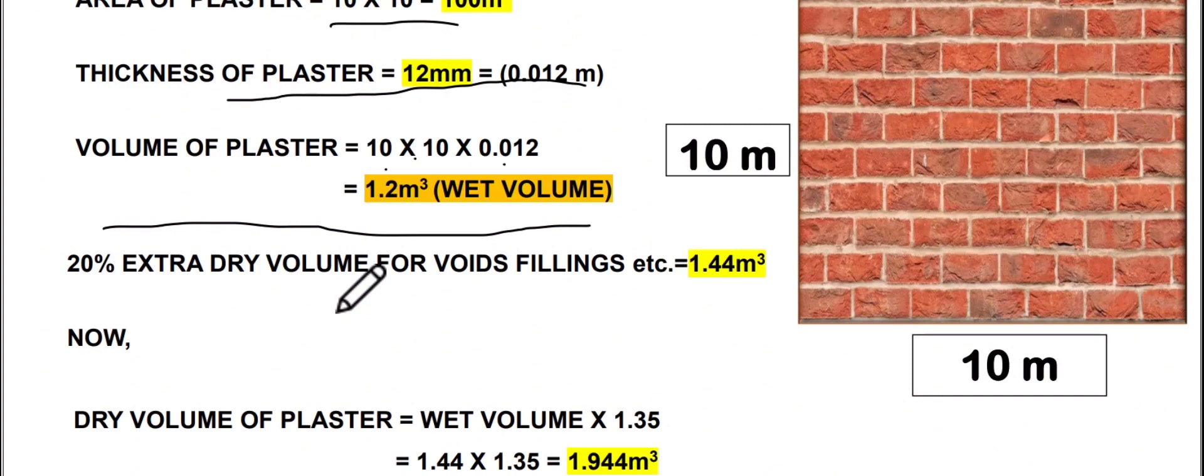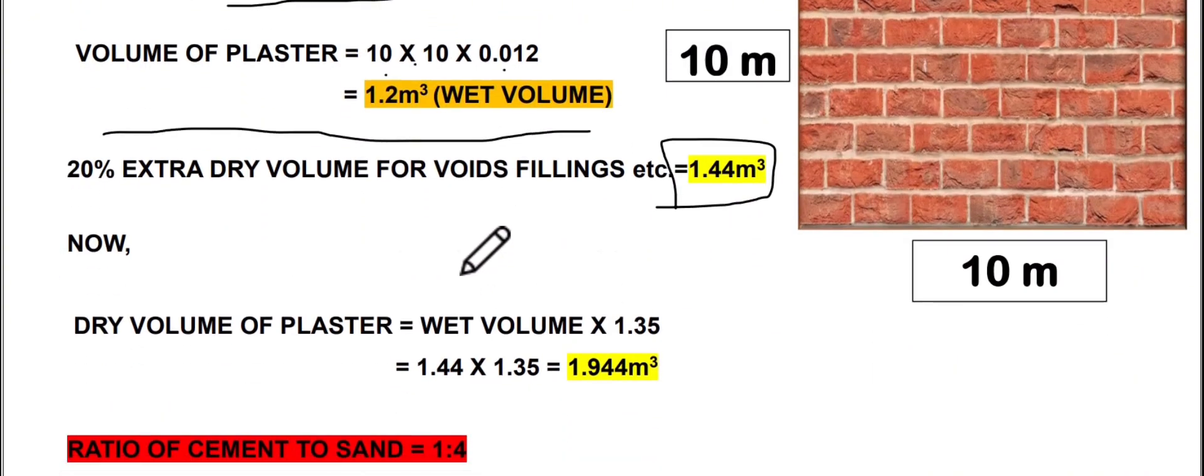So we have to fill in the gaps, so we have to add 20% extra. If you have 1.2 cubic meters, 20% extra gives 1.44 cubic meters, which is the box highlighted. This is the total wet volume, about 1.44 cubic meters. Next step, we have to convert wet volume to dry volume. Dry volume of plaster is wet volume multiplied by 1.35. 1.35 is a constant value. 1.44 multiplied by 1.35 is equal to 1.944 cubic meters, so we have dry volume which I have highlighted in the box, that is 1.944 cubic meters.